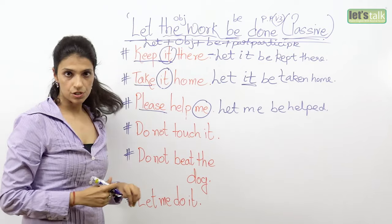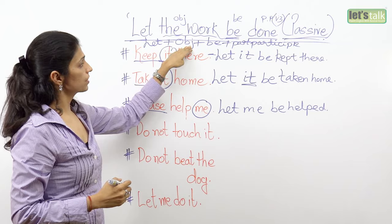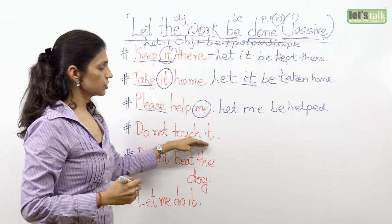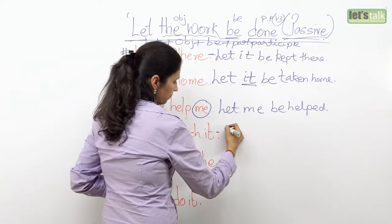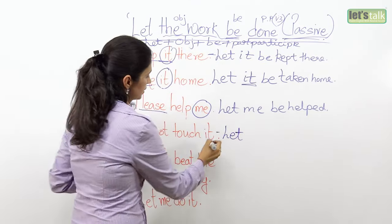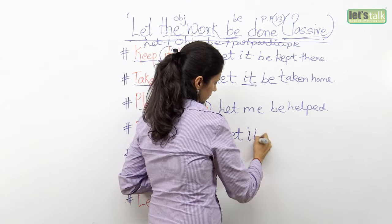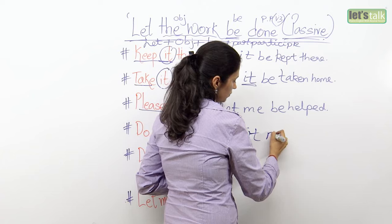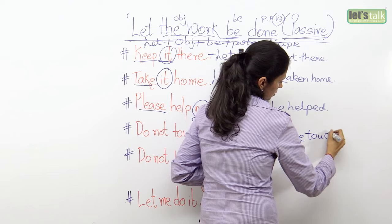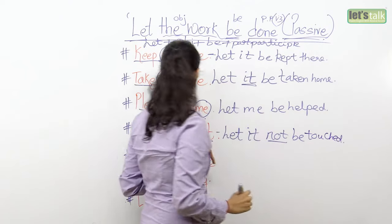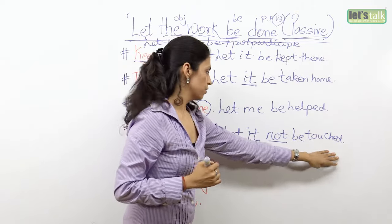Now let's look at negatives. 'Do not touch it.' You follow the same structure, but in a negative you place 'not' after the object. Ask 'do not touch what?' — the object is 'it.' So you have 'let,' the object 'it,' then 'not,' then 'be,' then the past participle. The passive is: 'Let it not be touched.'